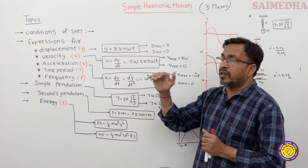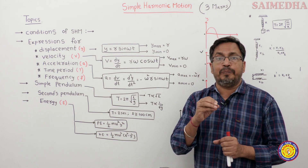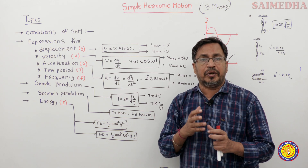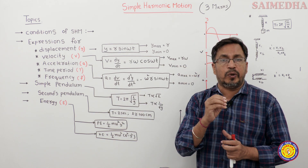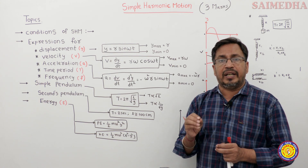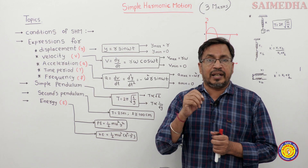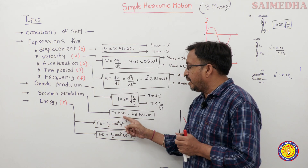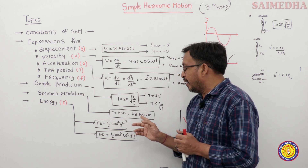That's why we are discussing, in our syllabus, the simple pendulum — the time period, length of the pendulum, and acceleration due to gravity. Seconds pendulum means it is a pendulum where the time period T equals 2 seconds. And one more standard fact: the length approximately equals 100 centimetres.